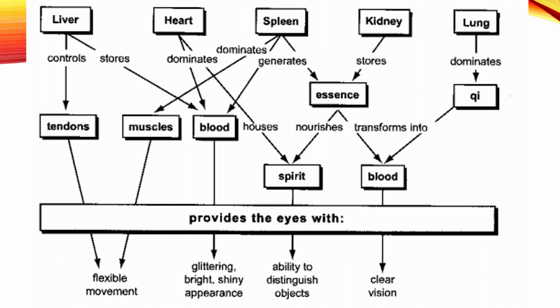The eyes are the orifice of the liver. The function of the liver is to store the blood and control the sinews to maintain the eye's normal vision and movement. Blood is the nutritive resource for the eyes. Therefore, the spleen's function of generating blood and the kidney's function of storing essence are directly related to the normal functioning of the eyes. The dispersing and descending function of the lung maintains smooth qi circulation, which provides the power to maintain blood circulation, so the lung is also indirectly related to the eyes.